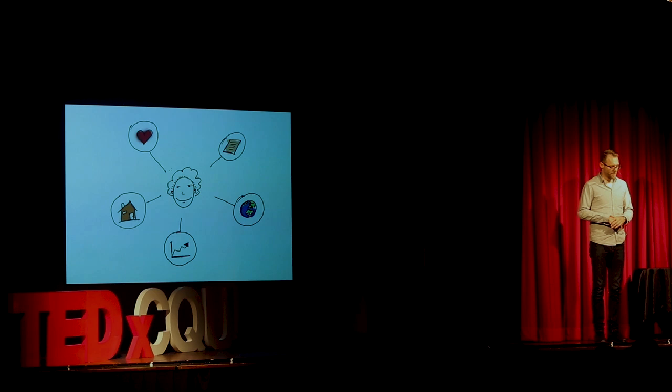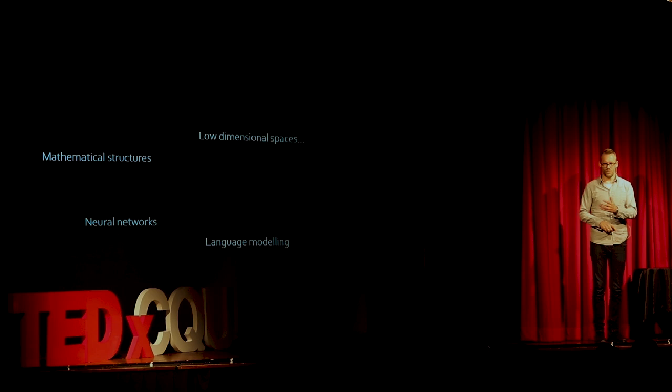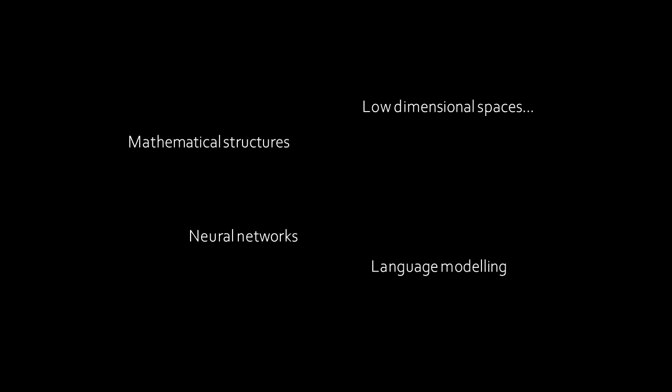Before I get to my three suggestions, I want to explain what embedding social innovation means. When I was planning this talk, I decided to Google 'embedding' — maybe it wasn't a good idea — because I use the term all the time and it's in our university strategy, and I think I kind of know what it is. But when I Googled it, up came words like low-dimensional spaces, mathematical structures, neural networks — words I can hardly pronounce.